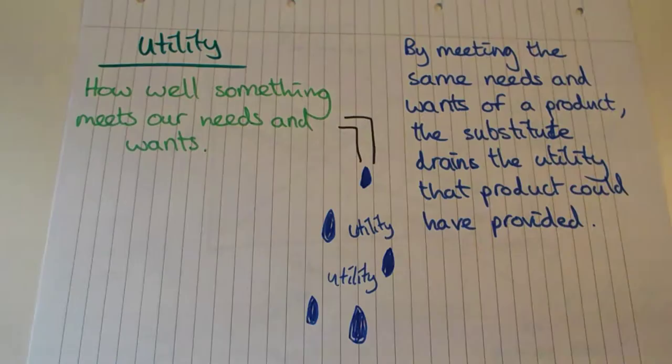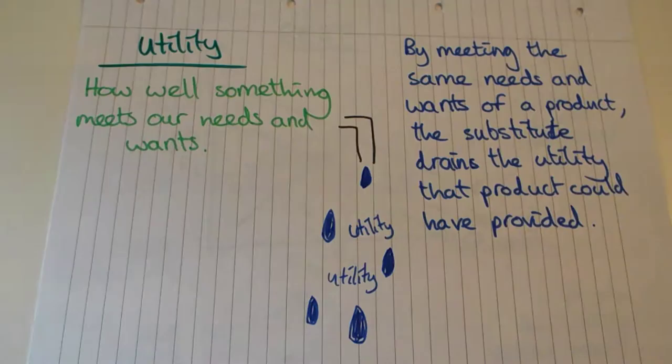What a substitute does is it meets the same needs and wants of the product it's substituting for, so it sort of drains the utility that product could have provided. For beef for example, if I eat a load of chicken, then I'm not going to enjoy eating beef straight afterwards as much as I would have enjoyed eating beef before I ate the chicken.